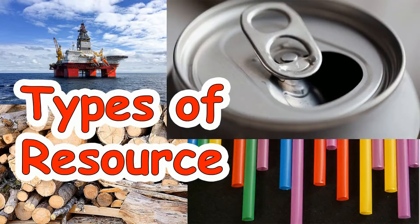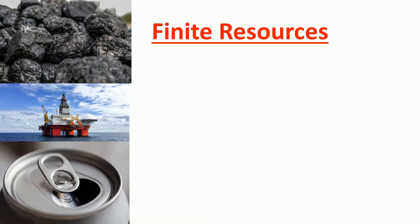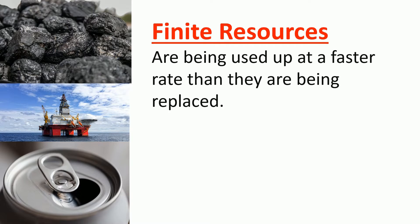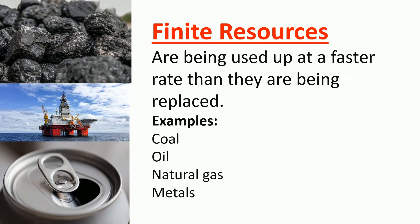We're now on to the last topic of GCSE chemistry, which is 'using resources,' and we're going to kick that off by looking at the different types of resource. First, looking at finite resources — these can also be called non-renewable resources. These are being used up at a faster rate than they are being replaced. For example, coal takes millions of years to form and we're using it up much faster than that, so one day we will run out. Other examples are oil, natural gas, and metals found in the ground as ores.